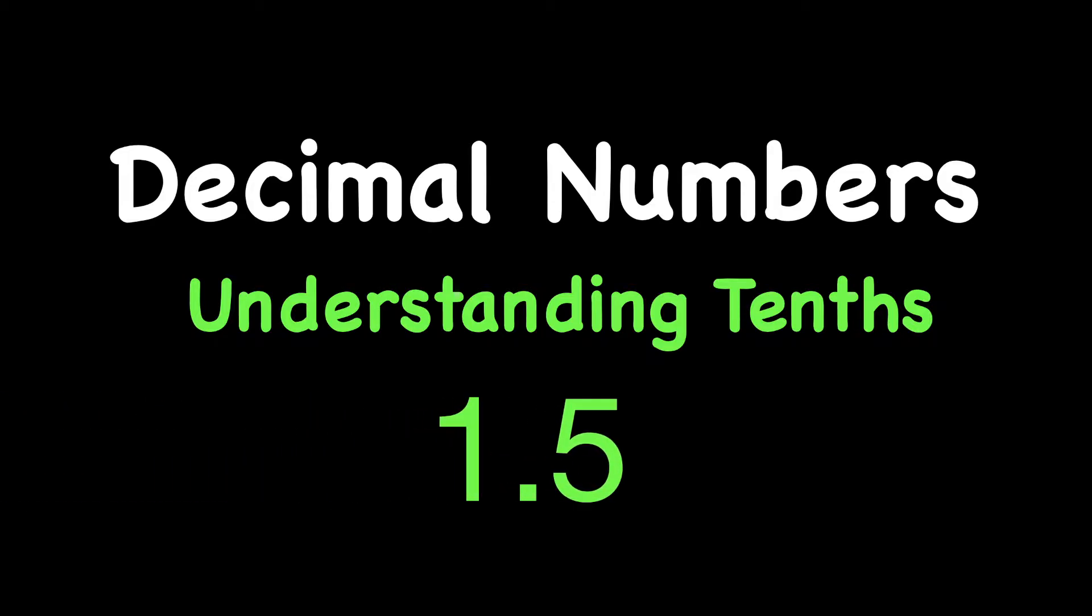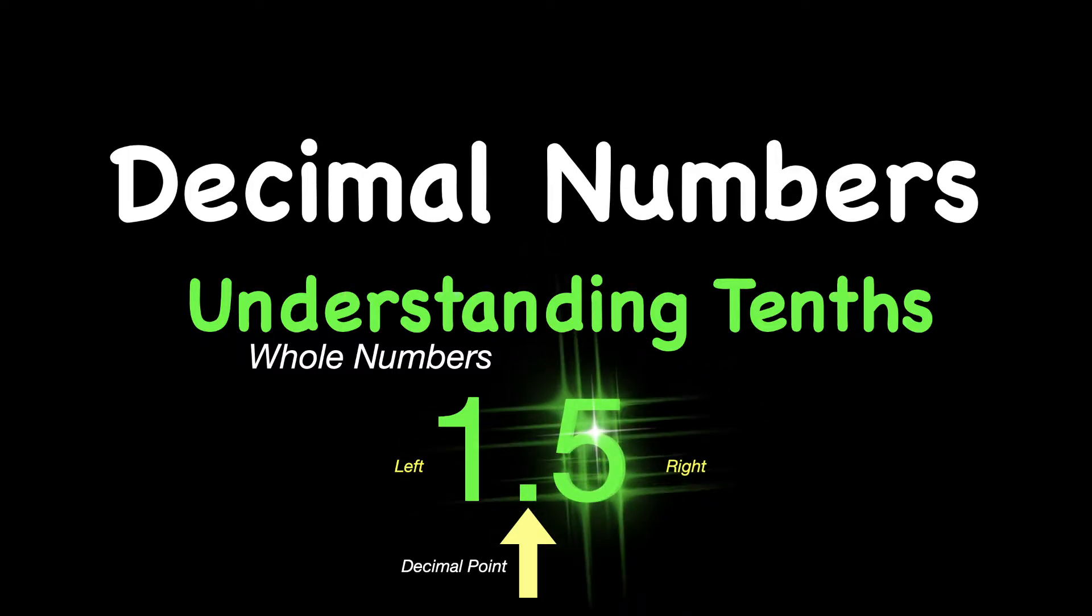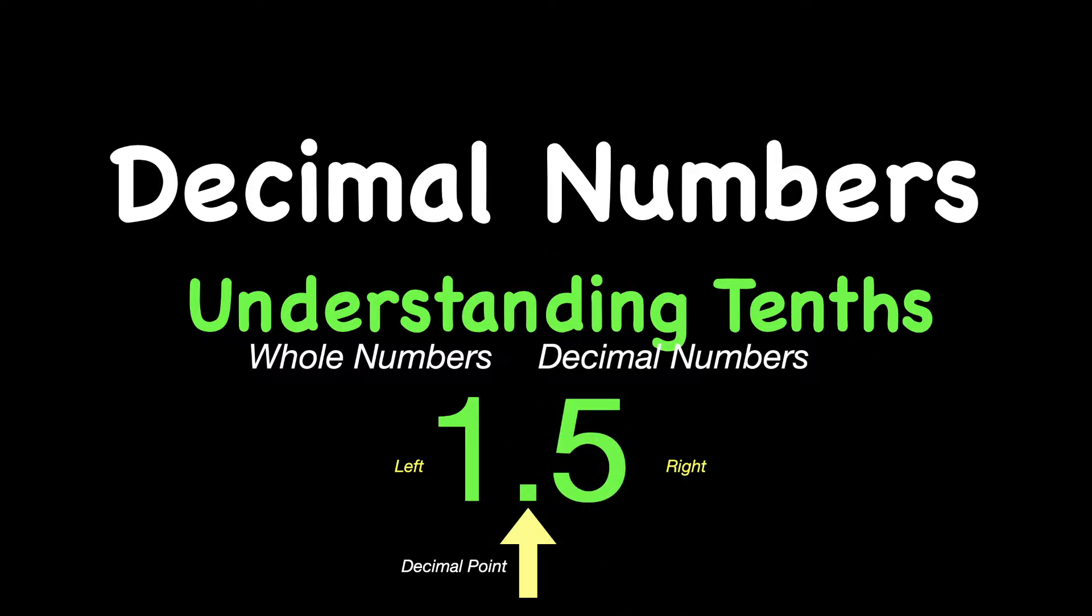For example, if you have the number 1 decimal point 5, the decimal point in the middle there has a job to separate your whole numbers on the left side, for example the 1, with the right side, like the 5, which are decimal numbers.